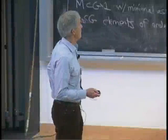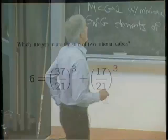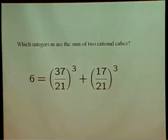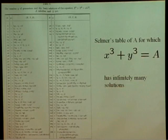It starts with this question: which integers m are the sum of two rational cubes? For example, 6 is, as you can see there. And so is 346. Here's a table that someone made.